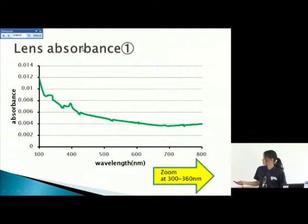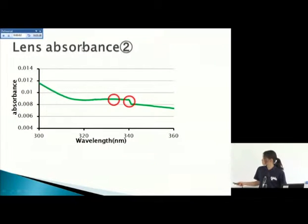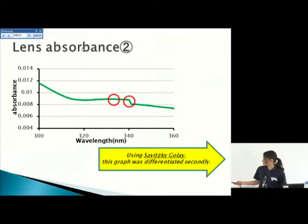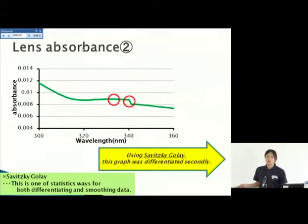This is my result. MAS have absorbance peaks in the range from 300 to 360 nanometers, so I zoomed into this range. Looking at these two parts, this part has a very loose arch and this part falls down. Using the Savitzky-Golay method, I differentiated this graph. Savitzky-Golay is one of the statistical methods for both differentiating and smoothing data.